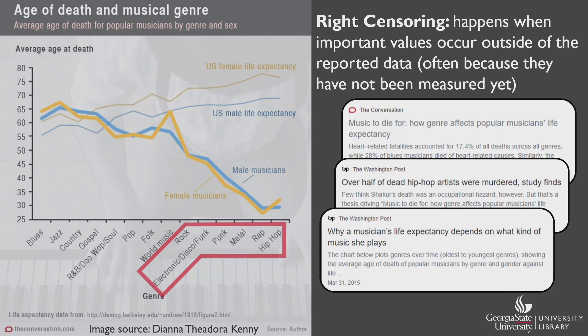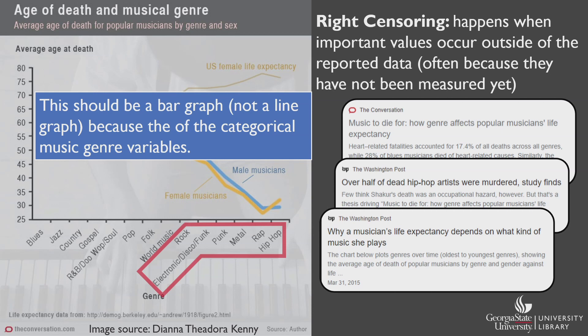Another issue with this graph is that despite the x-axis consisting of categorical variables — the music genres — the author used a line graph when they should have used a bar graph. This chart has issues with both its data and how it's visualized, yet reputable media outlets still picked up the story.